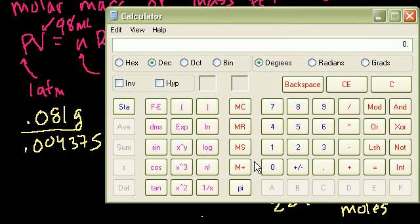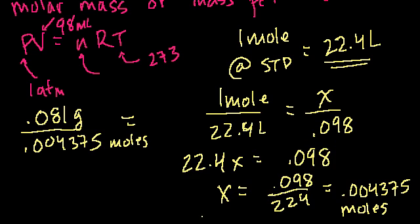Let's take the calculator out. So we have 0.081 divided by 0.004375 is equal to 18.51. So it equals 18.5 grams per mole.